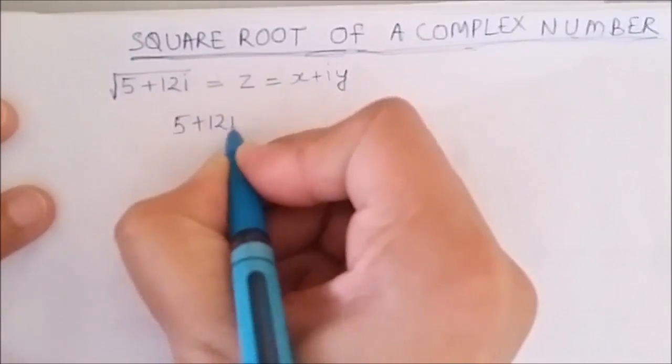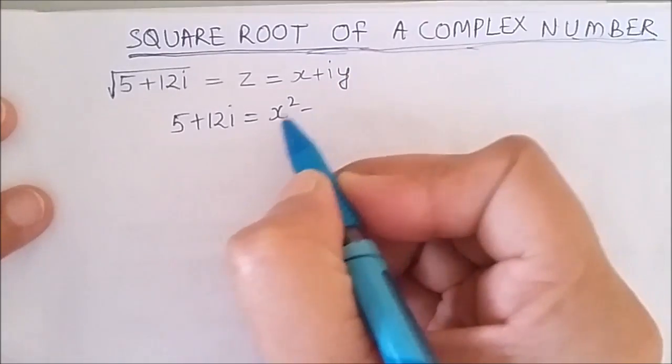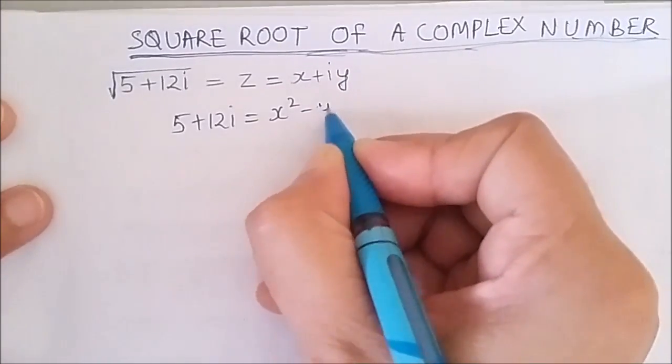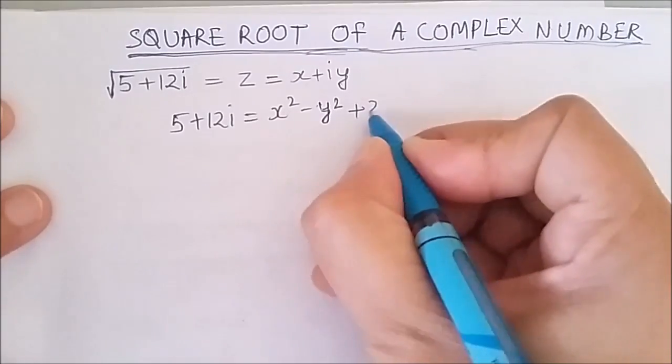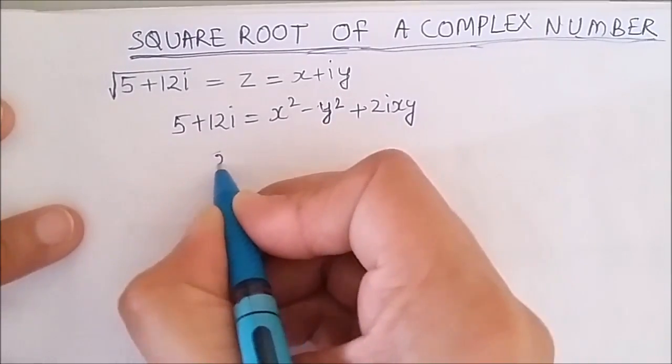If I take the square of x plus iota y, I will get x square minus y square plus 2 iota x y. And if I compare the real and imaginary parts, I will get...